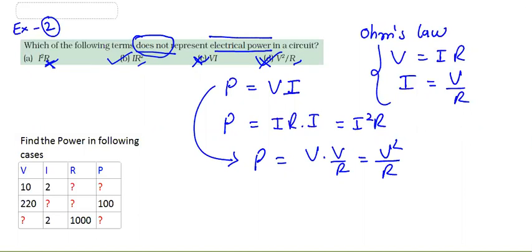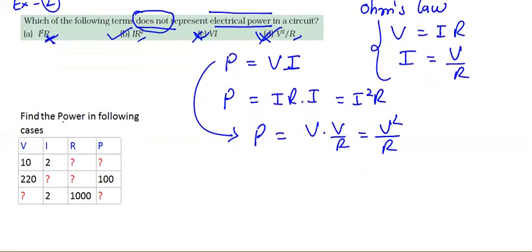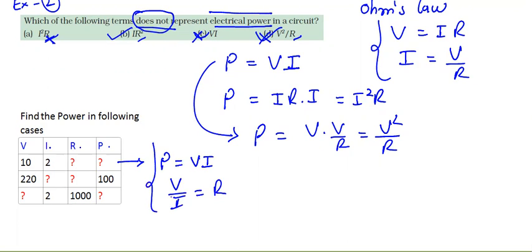There are practice problems: find the power in the following cases. In some cases V is given, in some I is given, in some R is given, and in some P is given — find the unknown quantities. If you need to find power and both V and I are given, use P = VI. If R is given, use Ohm's law V/I = R to find the missing value, then calculate power.